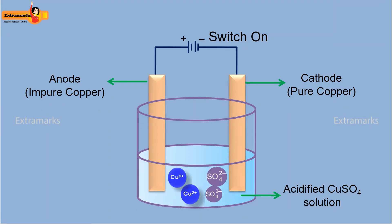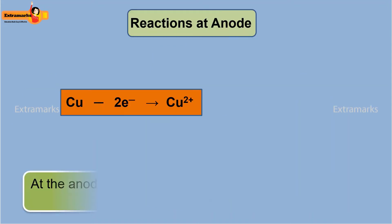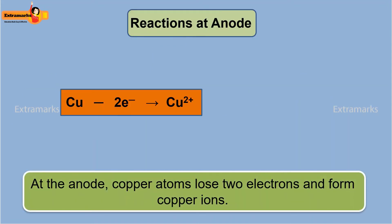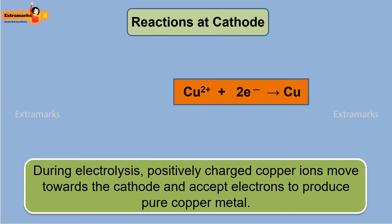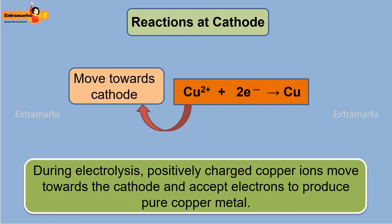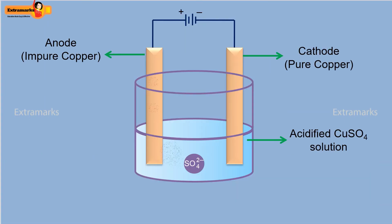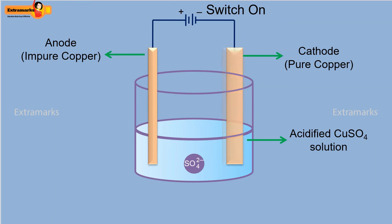The electrolytic solution contains copper and sulfate ions. At the anode, copper atoms lose two electrons and form copper ions, which enter the electrolytic solution. At the cathode, positively charged copper ions move towards the cathode and accept electrons to produce pure copper metal. As the process continues, the thickness of the impure anode decreases while the thickness of the pure cathode increases.